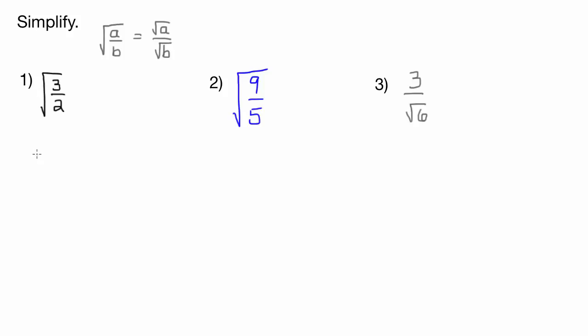So let's think about this. We could rewrite this as square root of 3 over square root of 2. Now we have the problem with the radical in the denominator, which is illegal, so we need to get rid of that. If you think about it, how can we get rid of the square root of 2?